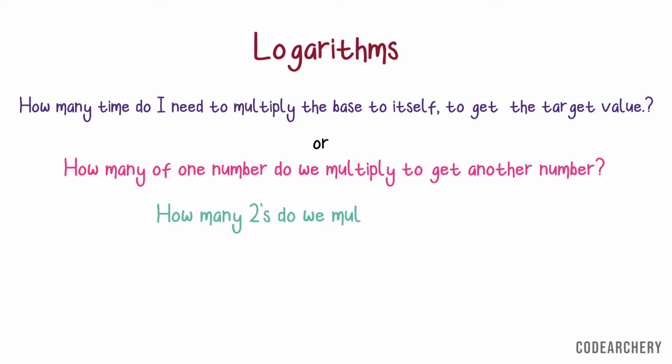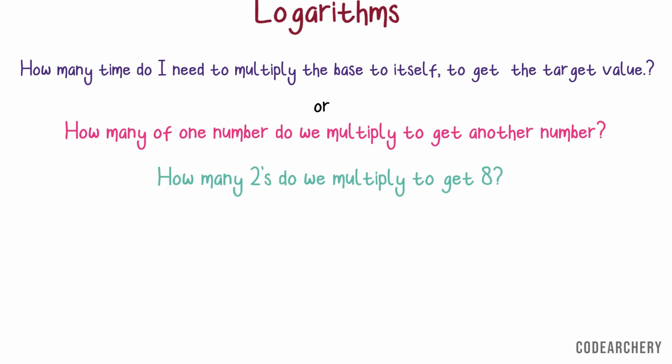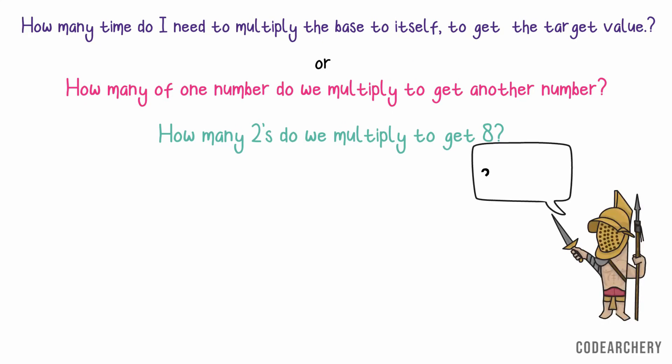Let's understand this by an example. How many 2's do we multiply to get 8? It's simple. We have to multiply 2 thrice to get 8.